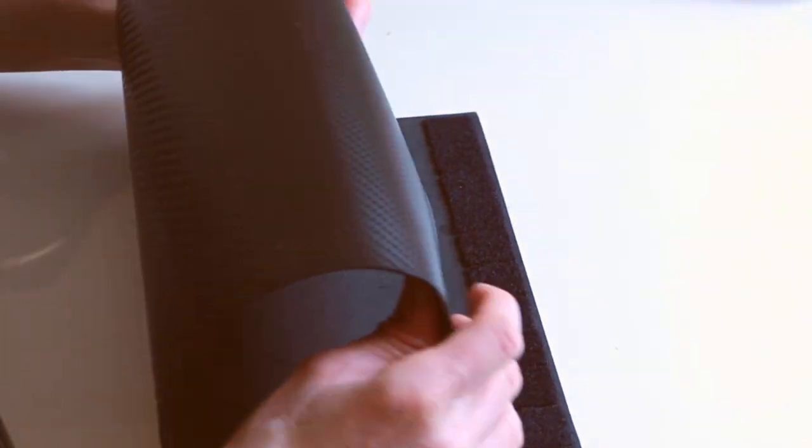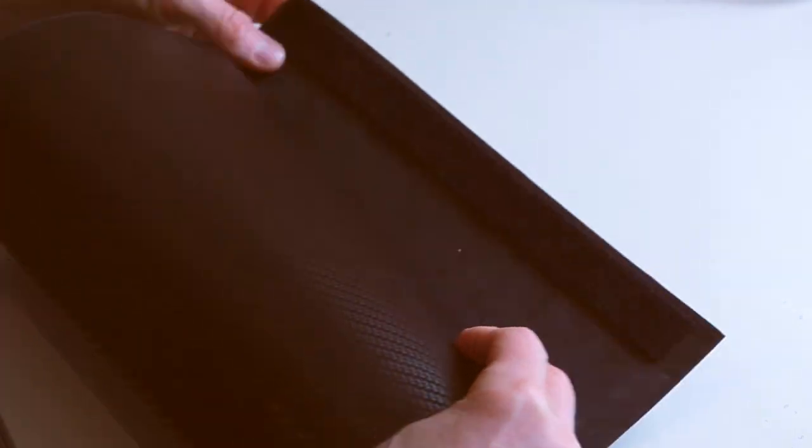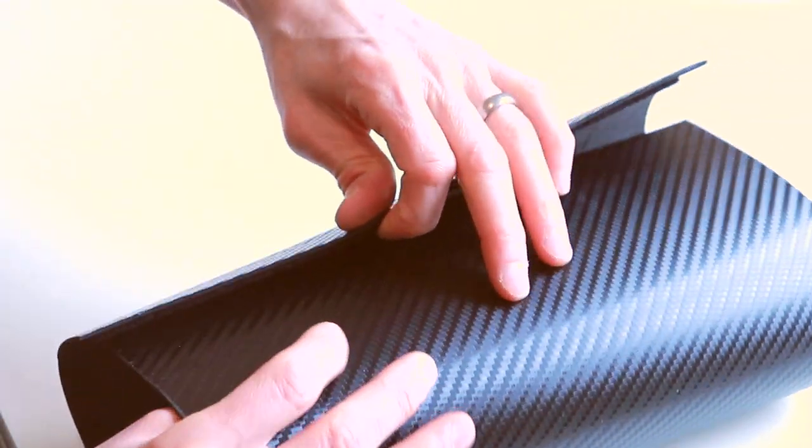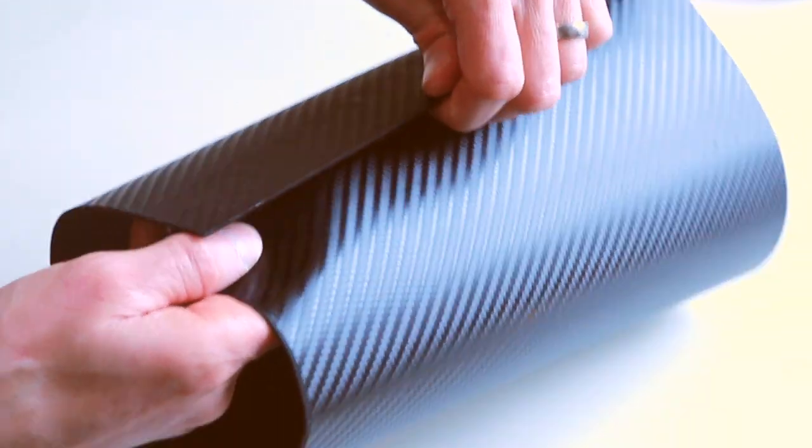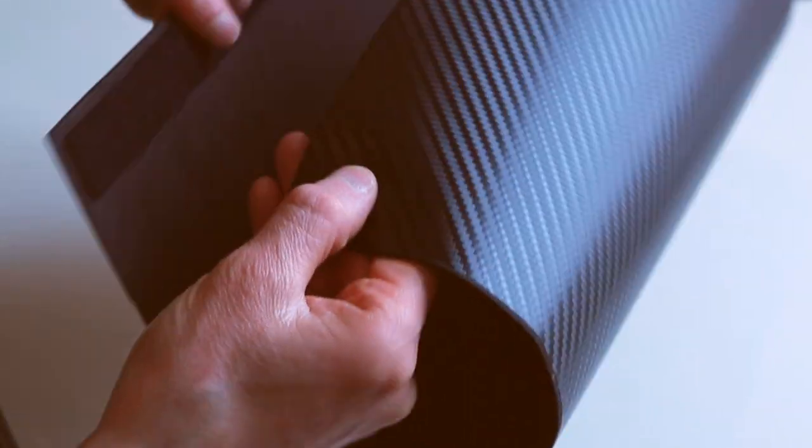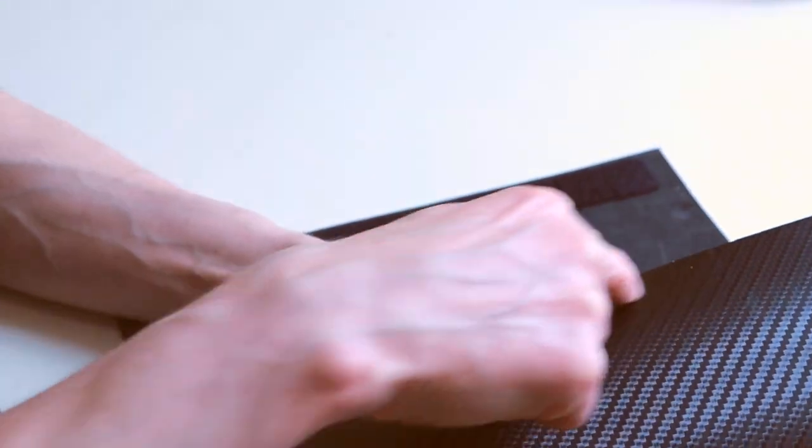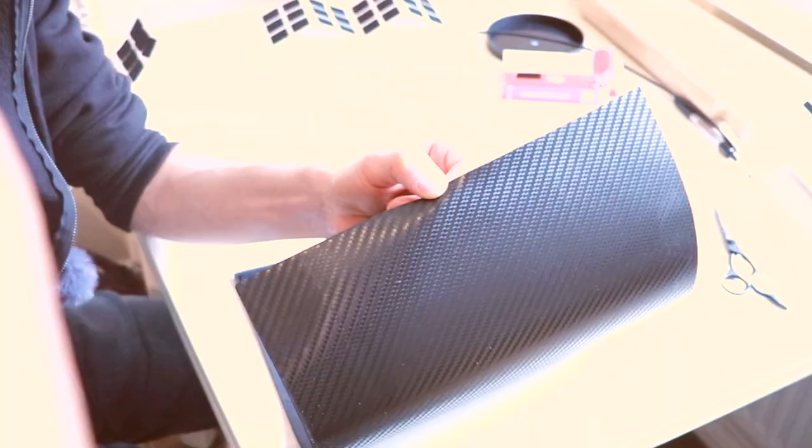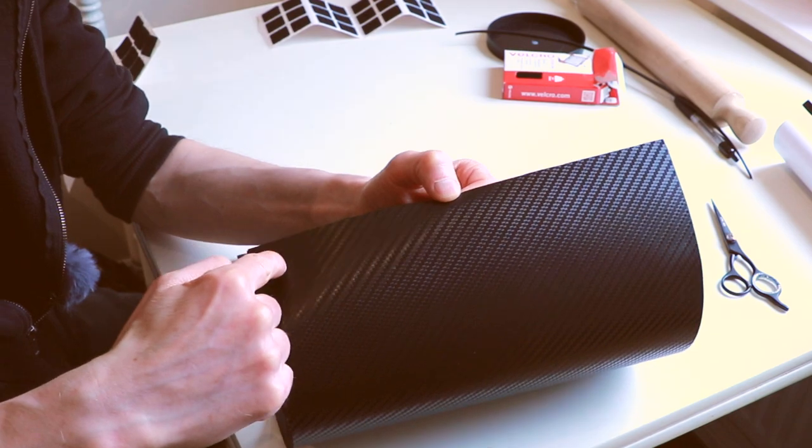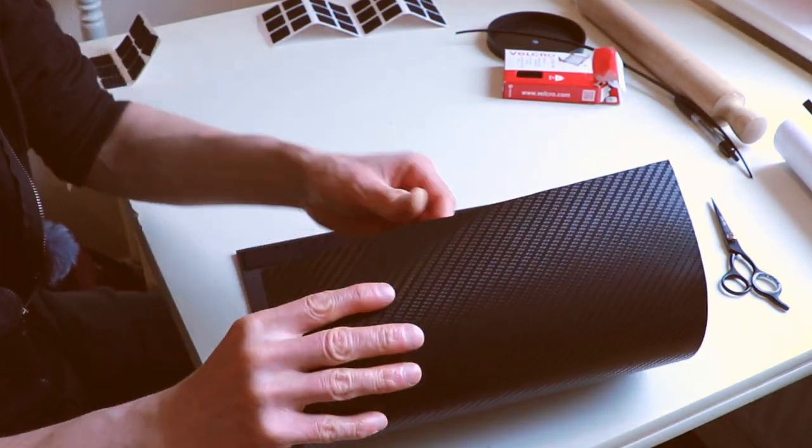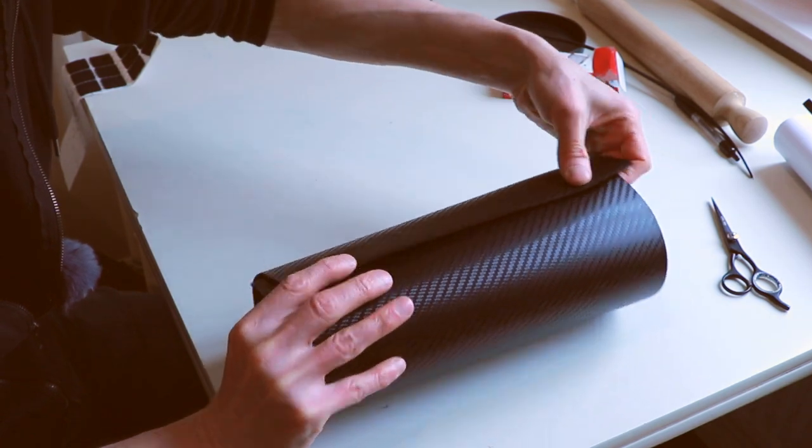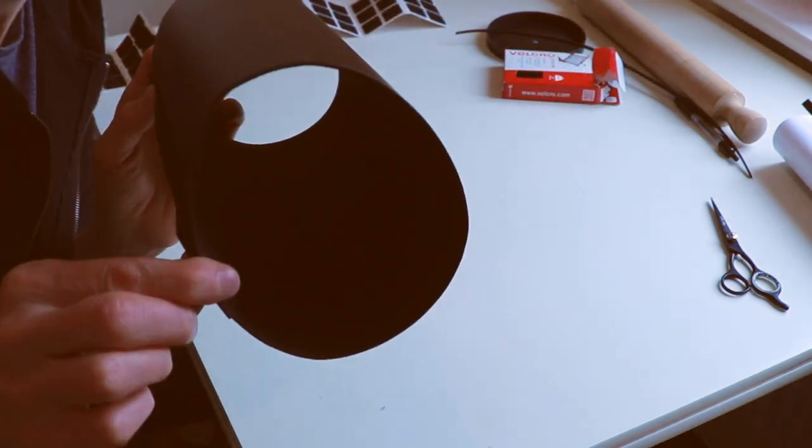When we roll this over, we want to apply the other side of the velcro. We need to go to where this is going to join, so the other velcro squares need to go along this edge here. So when we fold it over, they meet and it forms a nice tube.